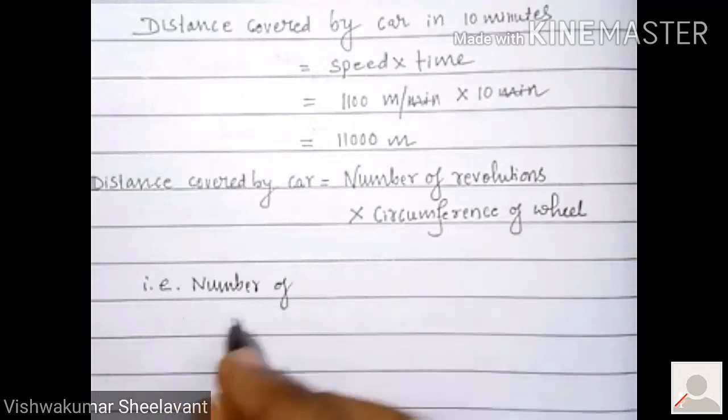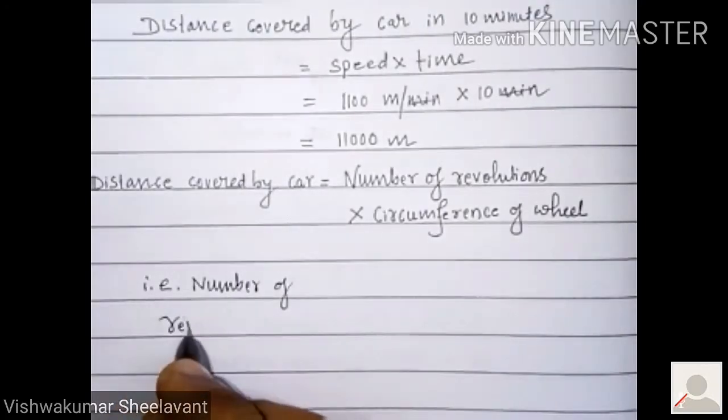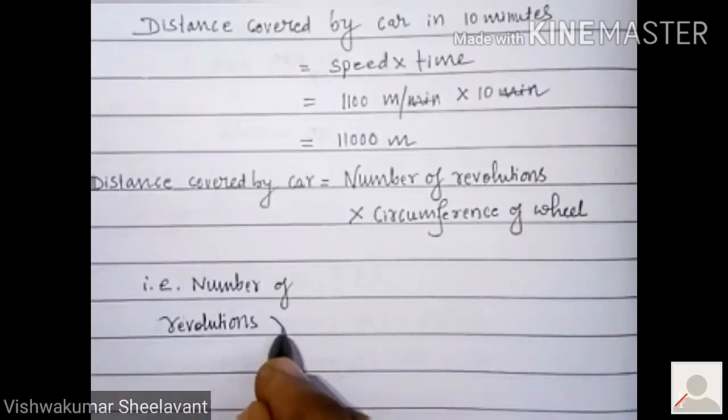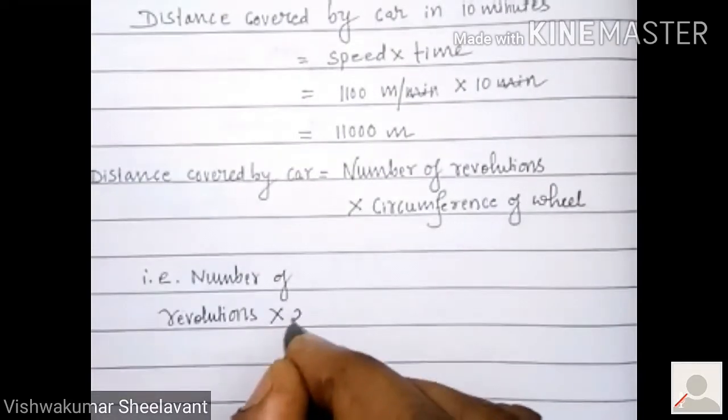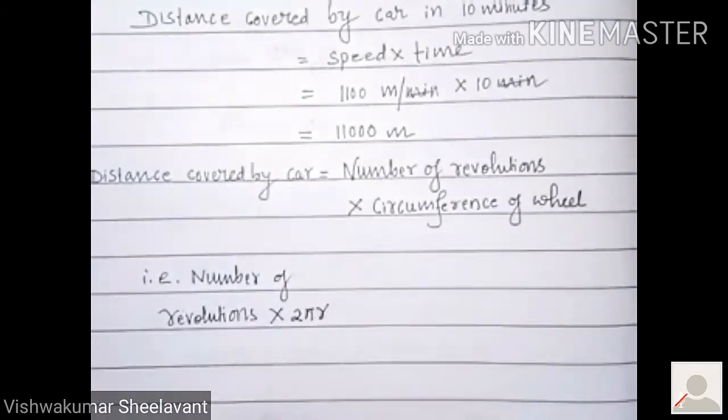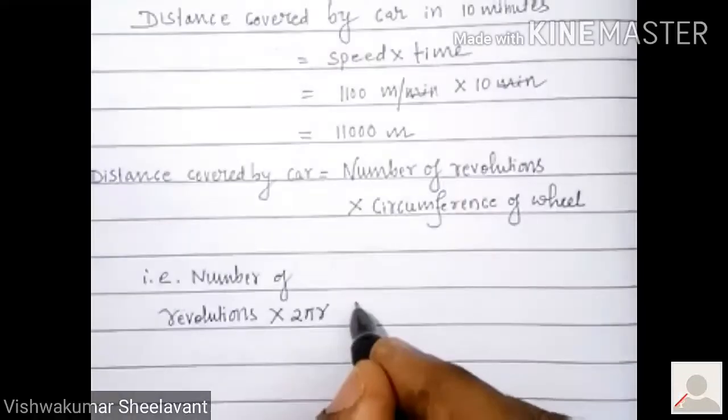Therefore, 11,000 meters must be equal to number of revolutions times circumference of wheel. Number of revolutions times 2πr equals 11,000 meters.